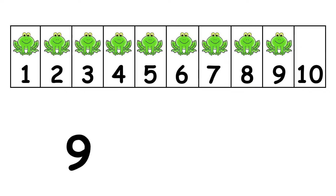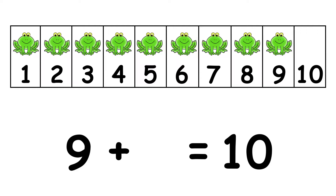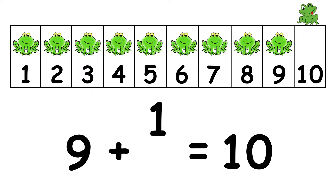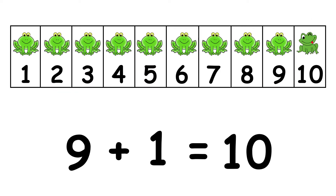We have 9 frogs. How many more do we need to make 10? 1. 9 and 1 makes 10.